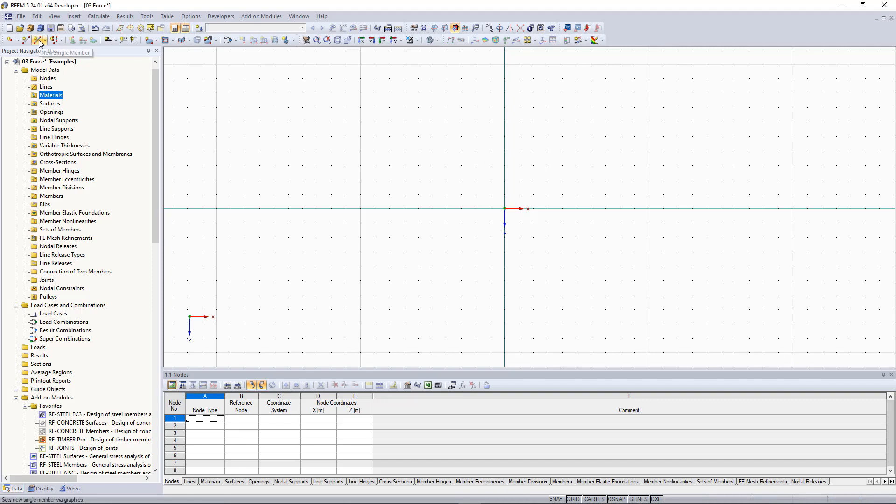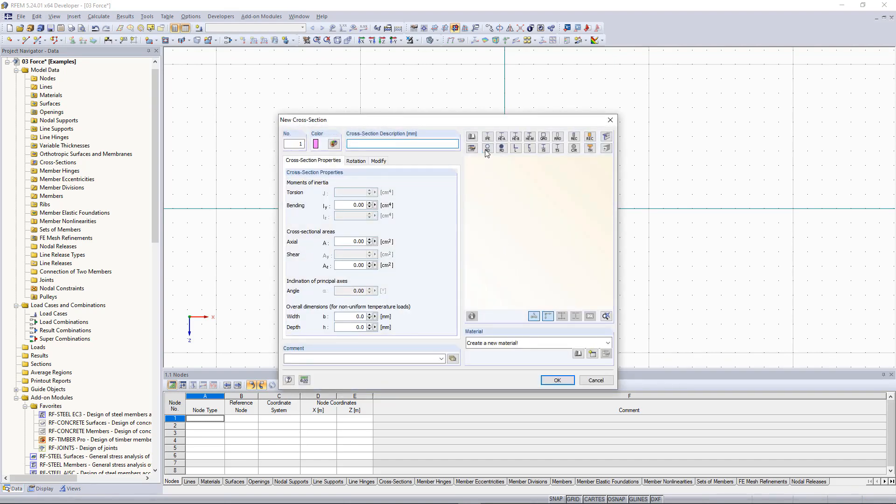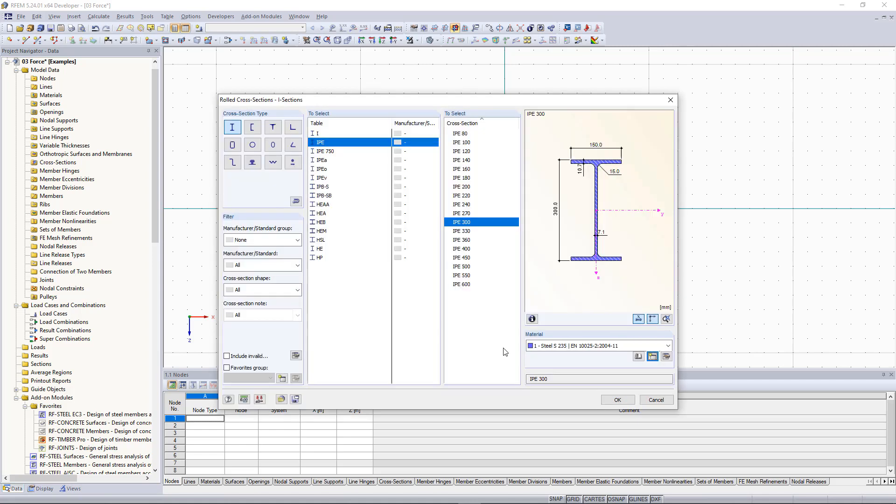We click the button in the toolbar and create a new cross section. We select a steel section IPE 300 and the material S-235.